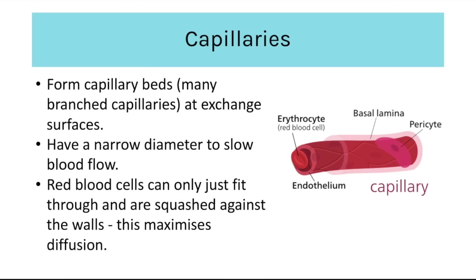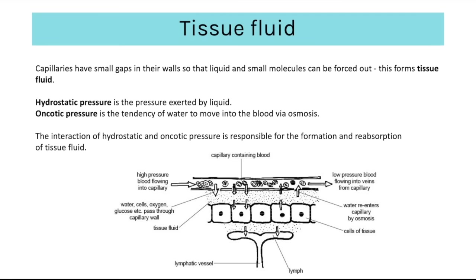Capillaries form capillary beds — many branched capillaries all connected — typically at exchange surfaces such as the outside of the alveoli. Capillaries have a narrow diameter to slow down blood flow; red blood cells can only just fit through and are squashed against the walls, which maximises diffusion. Capillaries are made up of a single layer of squamous epithelial cells, and the small gaps between those cells enable tissue fluid to form, as liquid and small molecules can be forced out due to high pressure.